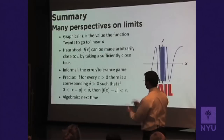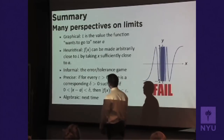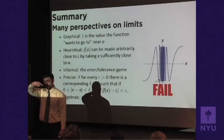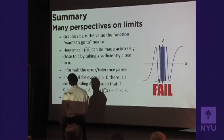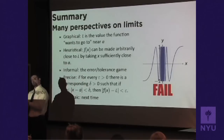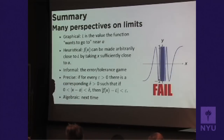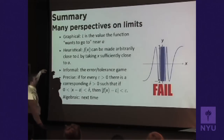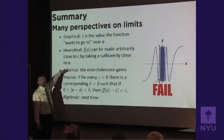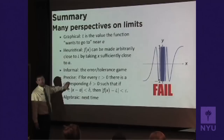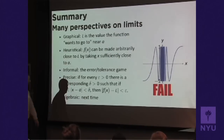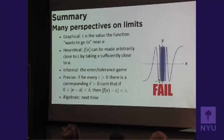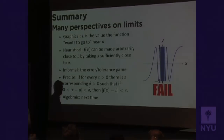I'm not going to make you write Greek on the test, but this idea of the function being made arbitrarily close by taking x sufficiently close is the key to understanding how limits actually work. We have lots of ways to look at limits: graphically — you can think about where the graph is going; our heuristic definition that f(x) can be made arbitrarily close to L by taking x sufficiently close to a; the informal error and tolerance game; and finally the exact precise epsilon-delta definition. Next time we'll look at algebraic ways to find limits in special cases. And that is it for today.